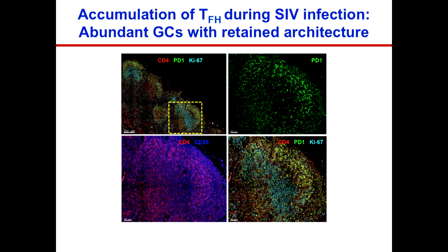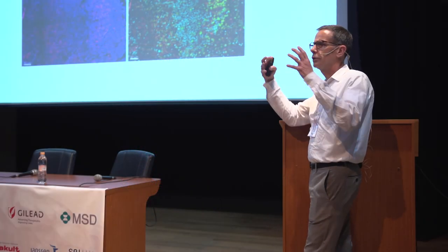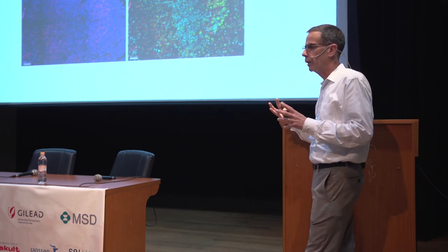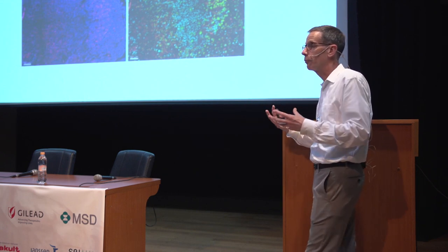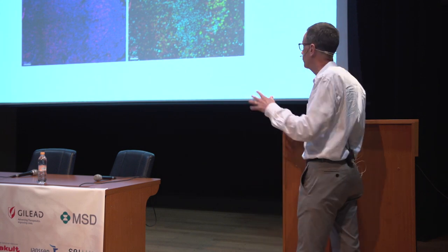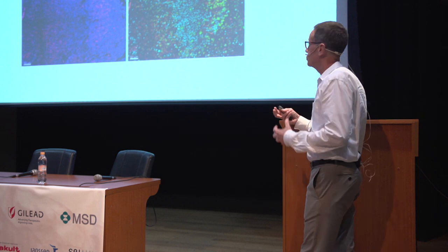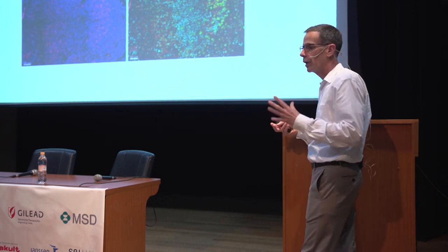Now let me show you an SIV-infected lymph node. Instead, what you see is these huge germinal center structures with lots of CD4 T cells, very high expression of PD1, and a somewhat disorganized structure. This is the lymphoid hyperplasia that those of us old enough to have seen HIV-infected patients before antiretroviral therapy would diagnose by feeling for these enlarged lymph nodes. There are these very hyperplastic germinal centers.